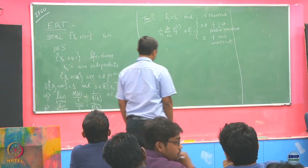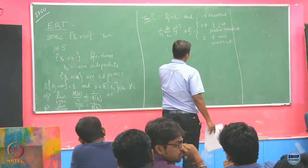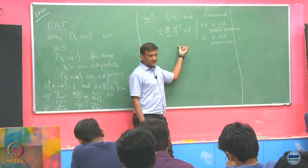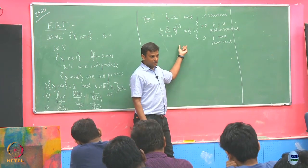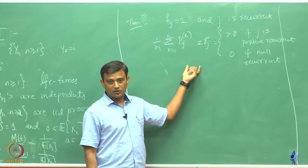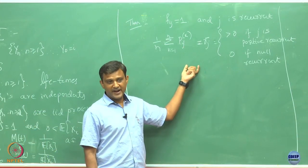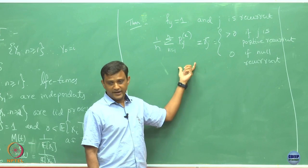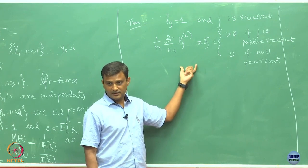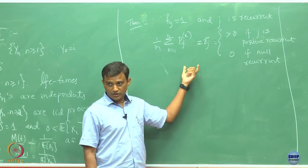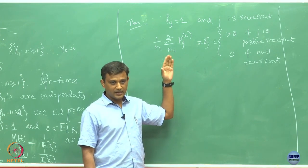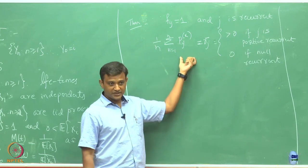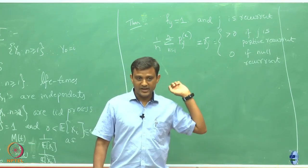Let us see why this is true. Remember this theorem — where did we use it? We used this theorem in the proof of invariant distributions. When we made the claim that for an irreducible DTMC, it is going to be positive recurrent if and only if π = πP, in the proof of that theorem we used it, and we have also used it in many, many theorems.